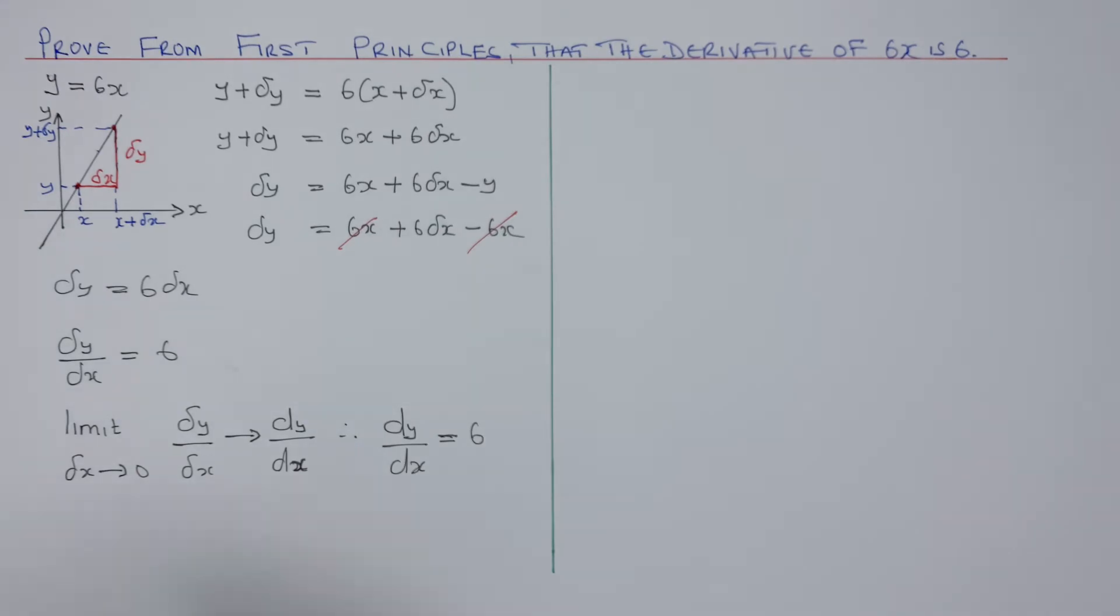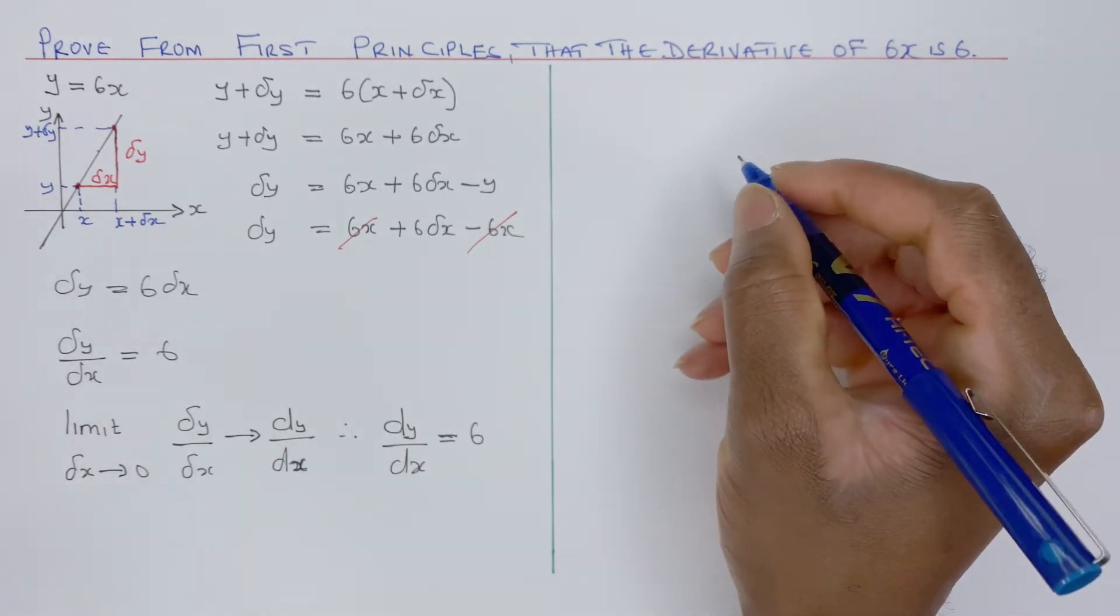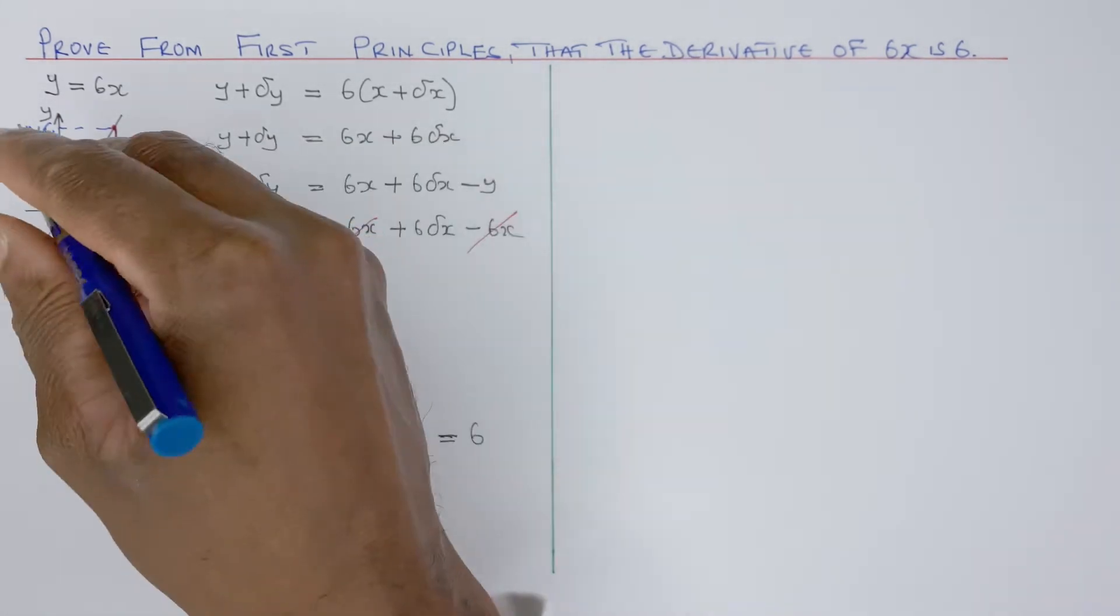That's how you derive it. That's classical method. The formula method is what I'm going to use now, which is common in textbooks these days. So instead of y, there's f of x equals 6x.